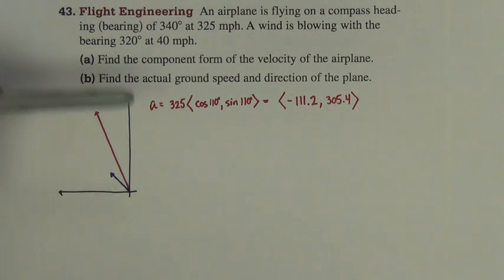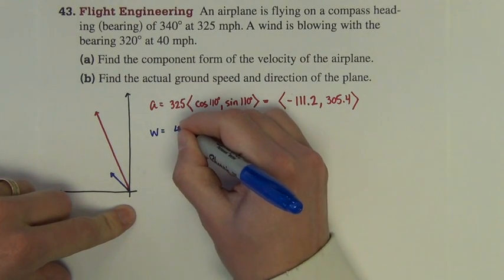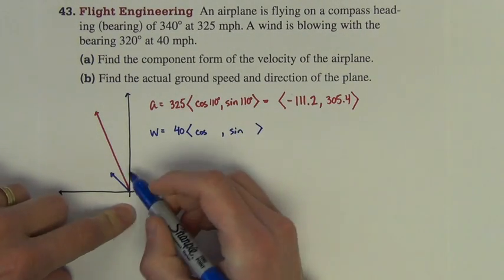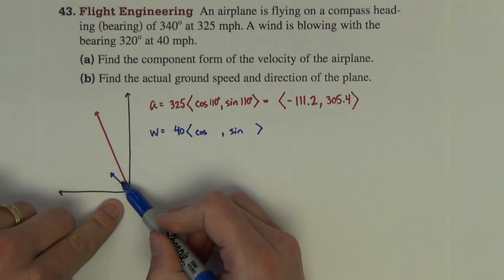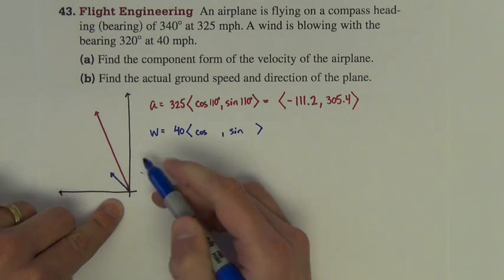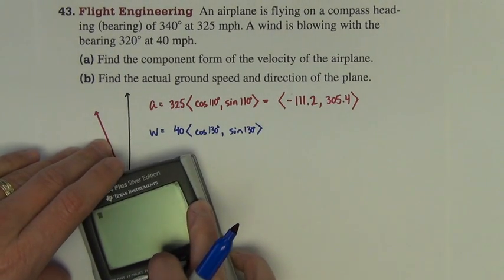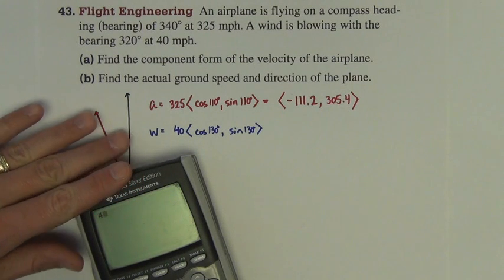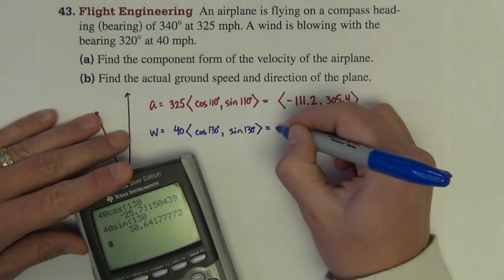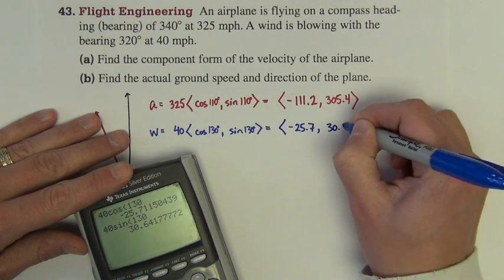Now let's do the same thing for the wind. I need its magnitude which is 40 times the cosine of an angle, sine of an angle. This 320 degrees was 40 shy of the full circle plus we've got this 90 degree first quadrant. So 90 plus 40 is 130 degrees. So we have then 40 cosine 130 and 40 sine 130. So the wind's vector is negative 25.7 comma 30.6.